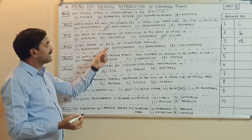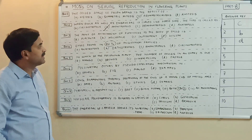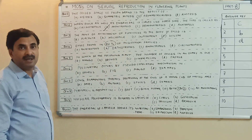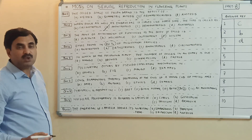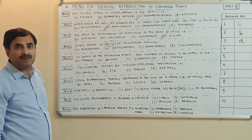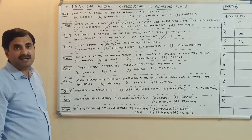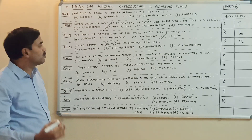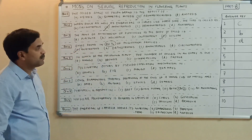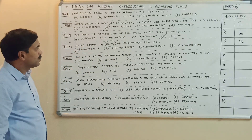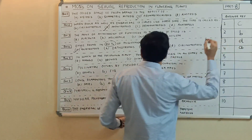Ovule found in 82% of angiospermic families: out of the six types of ovules, the most common type is the anatropous ovule, which is found in 82% of plant families. It is an inverted ovule. The anatropous ovule is the most common type. Question number four has the answer A.